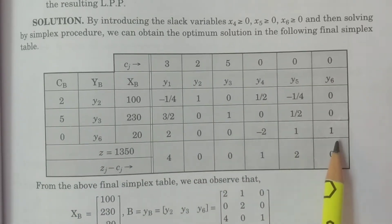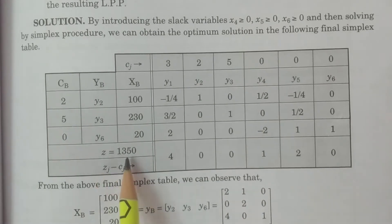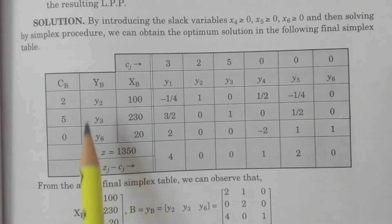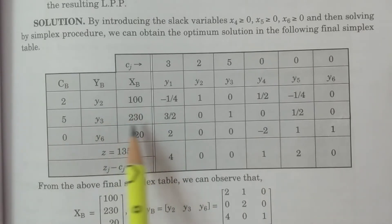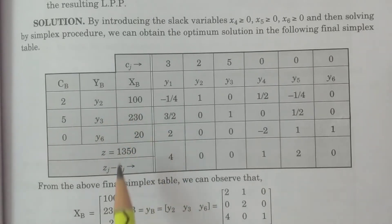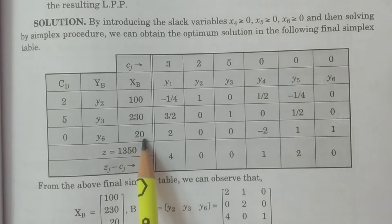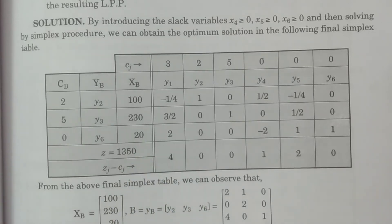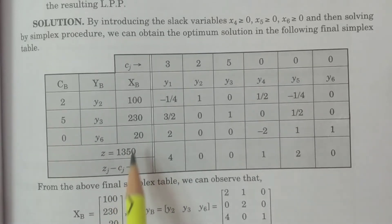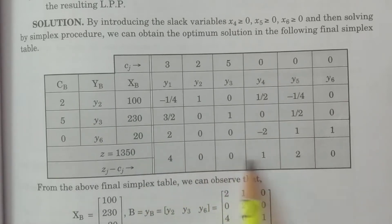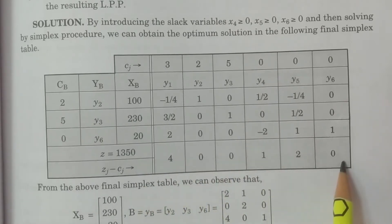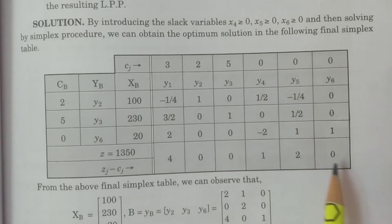If you observe, the optimal solution is z = 1350, with x1 = 0, x2 = 100, x3 = 230, and x6 = 20. All zj minus cj are greater than or equal to 0, hence this is the final optimum simplex table.